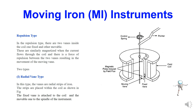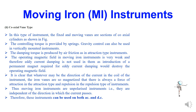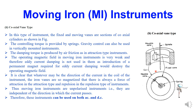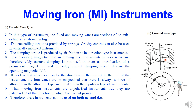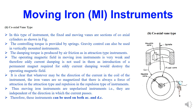Another type is the coaxial vane type. This is another construction arrangement where two vanes are present in coaxial form — a fixed vein and a movable vein. The same principle applies. Gravity control can also be used here, and damping torque is again air friction. Whatever the direction of current in the coil, the iron vanes are magnetized such that there is always a force of attraction in attraction type and repulsion in repulsion type. The moving iron instruments are unpolarized instruments — they are independent of the direction in which the current passes. Therefore, these instruments can be used on both AC and DC.